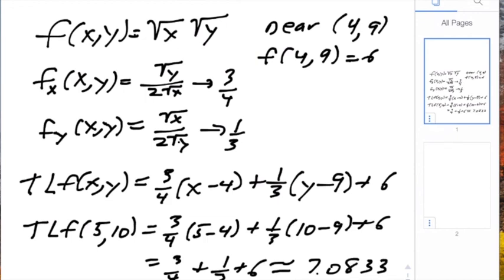Well it turns out that f(5,10) is the square root of 50, which is 7.0716. That's a pretty good approximation to it.